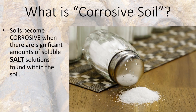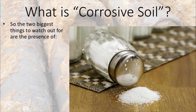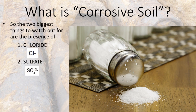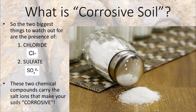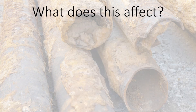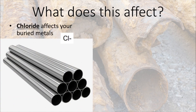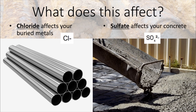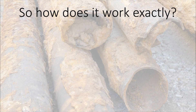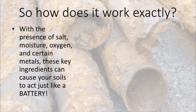We're going to break this topic down very simply and start at the very beginning. What is corrosive soil? Soils become corrosive when there are significant amounts of soluble salt solutions found within the soil. The two biggest things to watch out for are the presence of chloride and sulfate. These two chemical compounds carry the salt ions that make your soils corrosive. Chloride mainly affects buried metals, and sulfate mainly affects concrete.